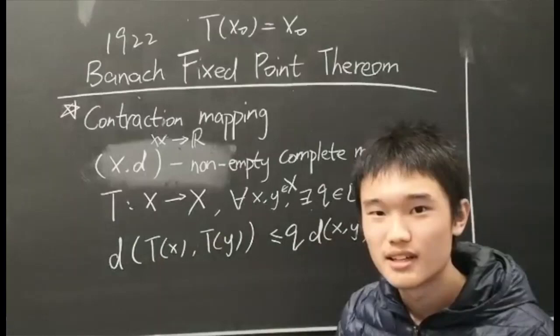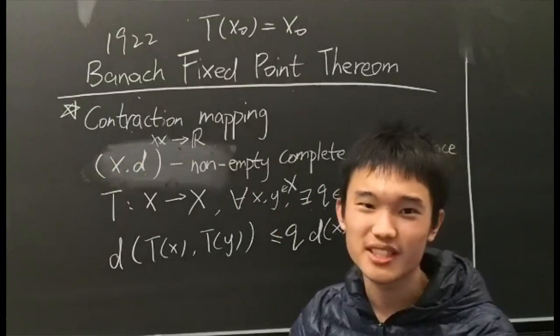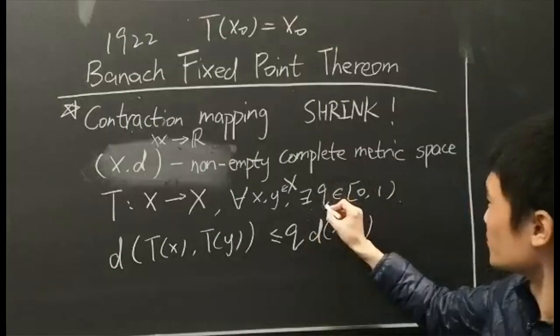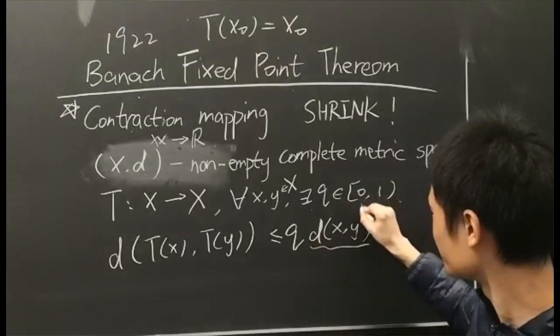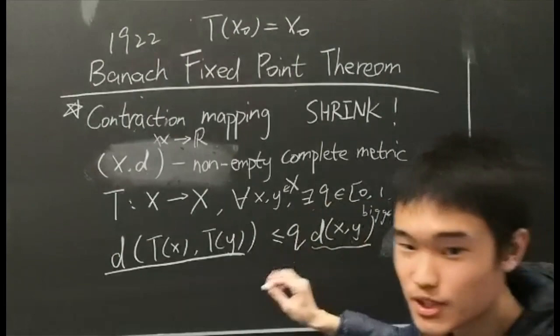Then T is a contraction mapping. So how to understand that? What is the meaning of contraction? Shrink. We make it shrink. We make it small. Since q is between 0 and 1, then this term is larger, this term is smaller. So we can have such a map that makes a former bigger one to a smaller one, then it is a contraction because it shrinks.